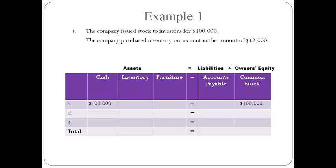The company then purchases inventory on account. The two accounts that change are inventory and accounts payable. An asset is received and will be paid for later. The accounting equation stays in balance. The amounts are written in the column of the account name.